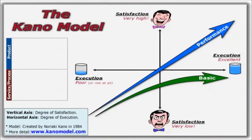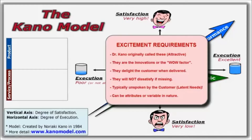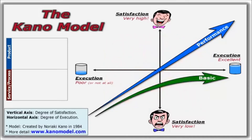The third type of requirements are called the excitement requirements. Kano originally called these attractive or delighters. These are the innovations that differentiate you from the competition. Some people call these the wow factor or USPs — unique selling propositions. They delight the customer when delivered, but don't cause any dissatisfaction when missing. They also play a critical role in the success of the most profitable products and services because they're often linked to emotions and unmet or latent needs.